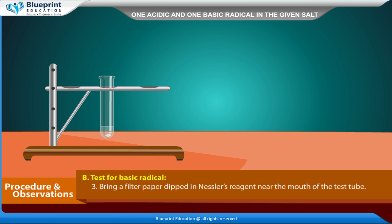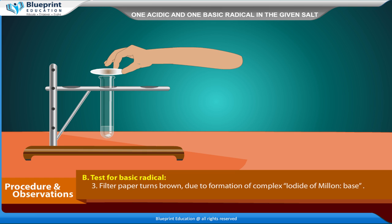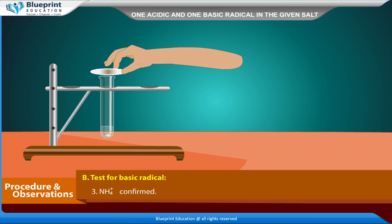Bring a filter paper dipped in Nessler's reagent near the mouth of the test tube. The filter paper turns brown due to formation of complex iodide of Millon's base. NH₄⁺ confirmed.